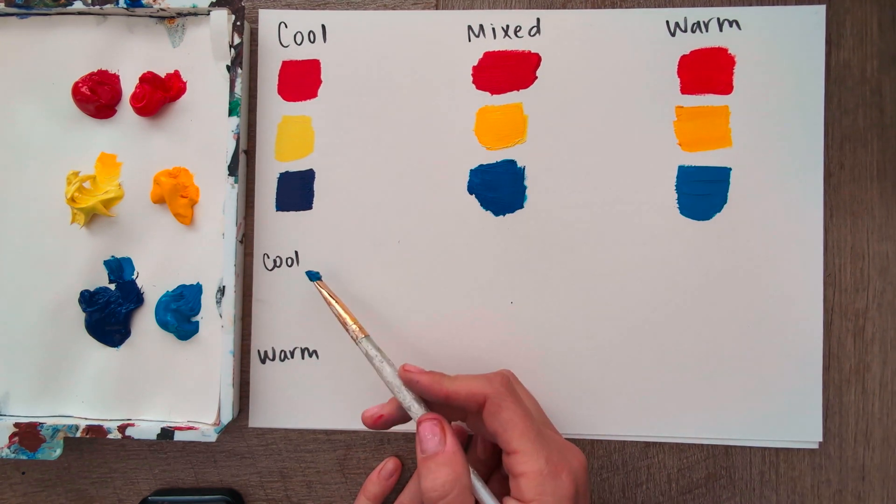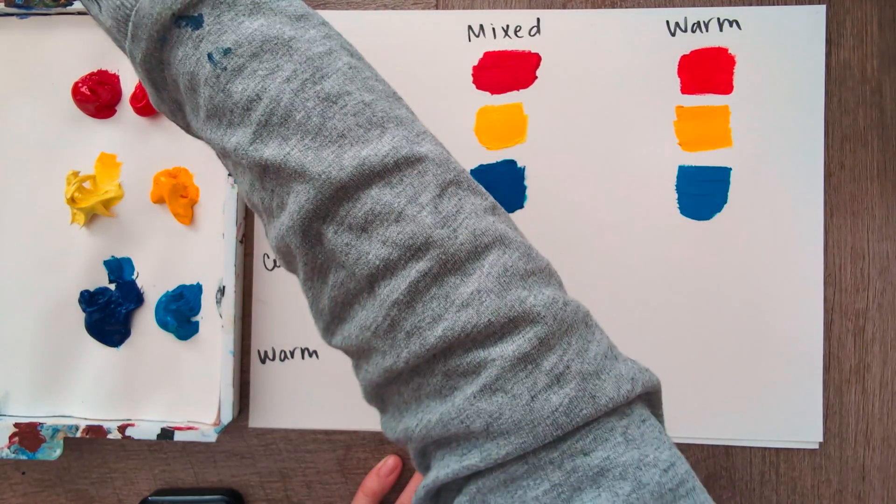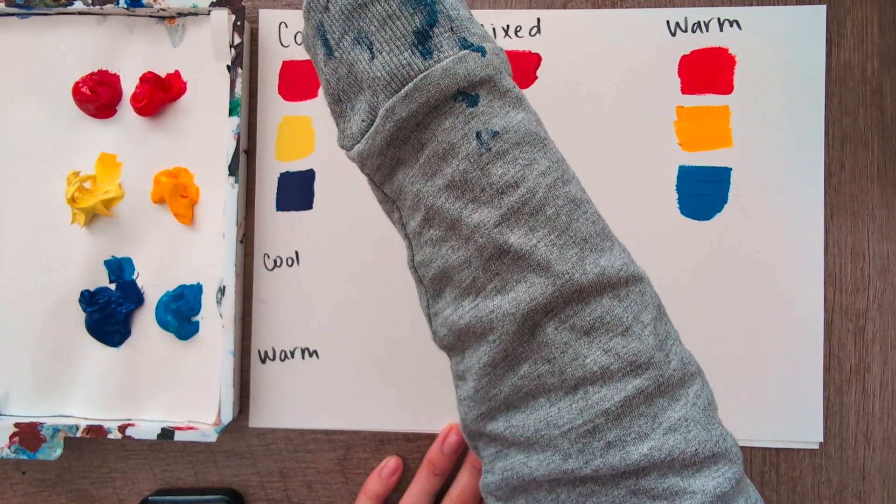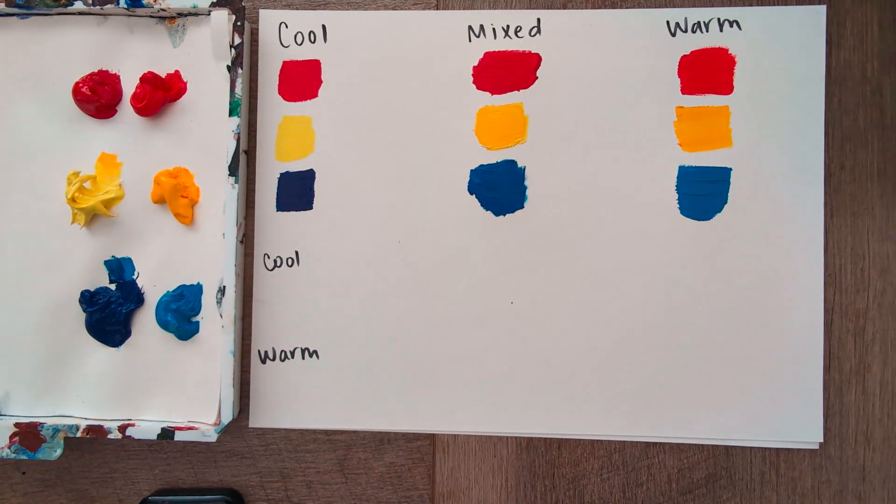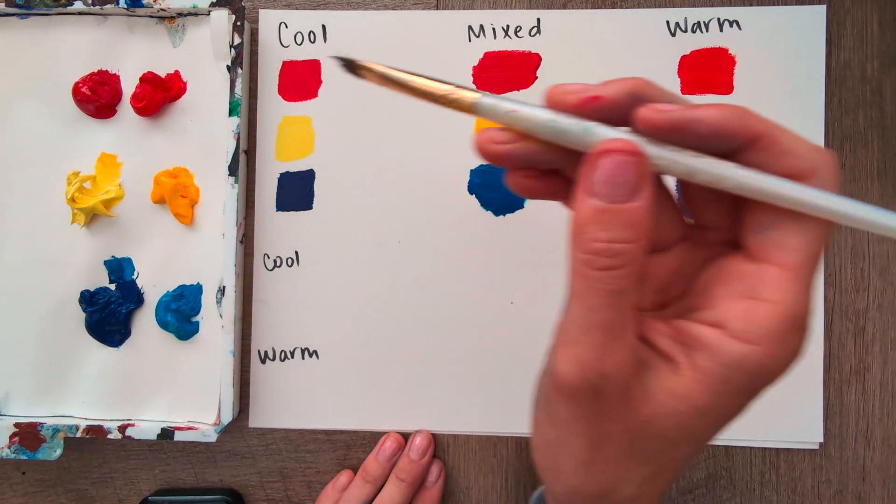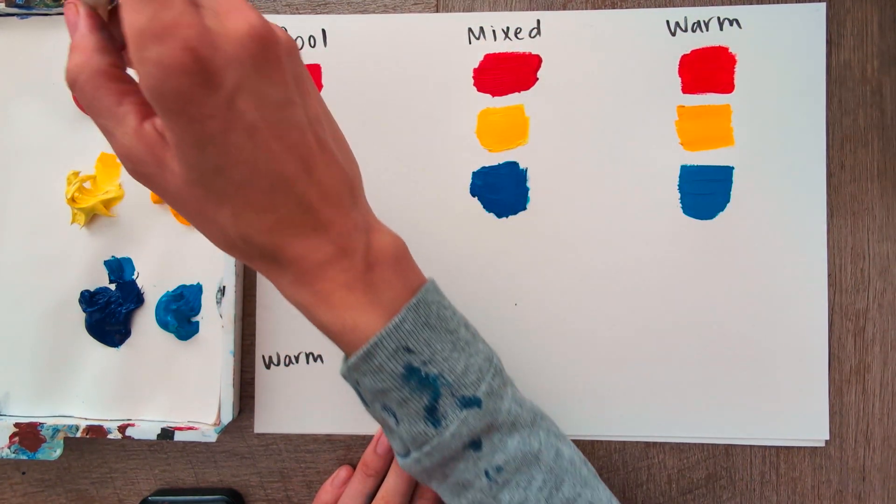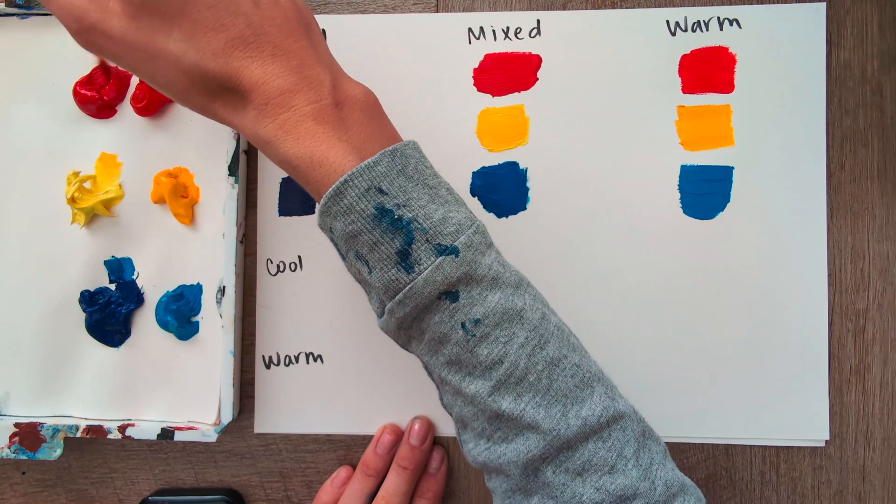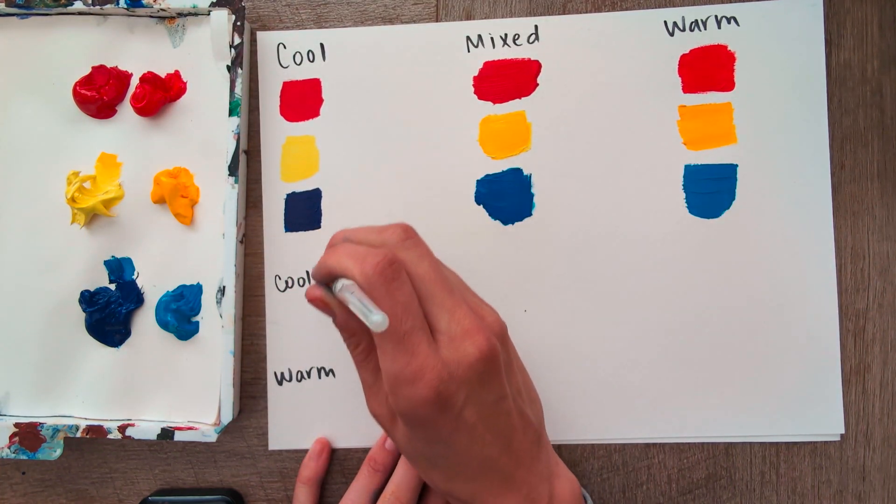Yeah, so we'll just go ahead and do a quick color spectrum using just the cool, just the warm. And then maybe I'll do one with the neutral colors later. Let's see. Let's start. Okay, so we're going to start with cool. So I'm going to start with red.